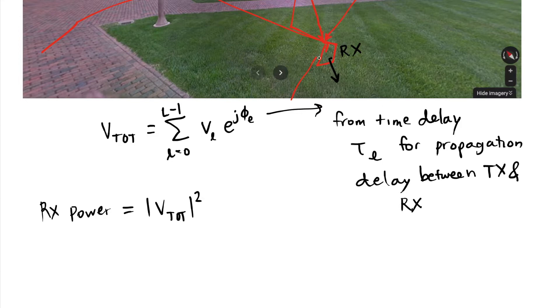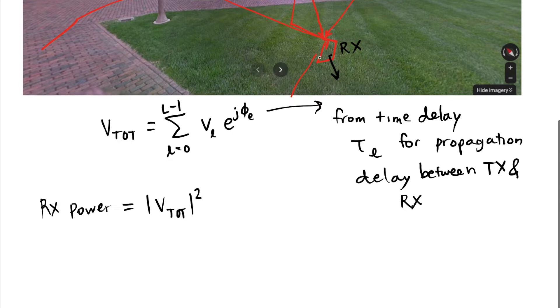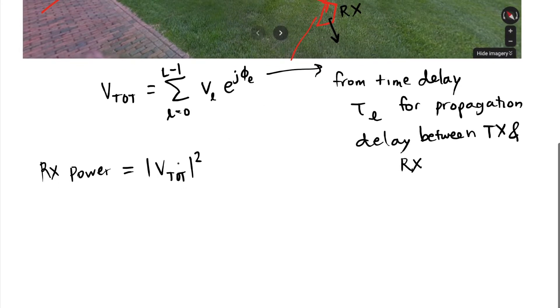For these different paths, the time delay is getting longer or shorter at different rates depending on the geometry of the situation. A delay gives a Fourier domain phase change of e to the j 2 pi times f times tau sub l. The phase change is proportional to the frequency and proportional to the time delay. If I'm moving, this time delay changes.